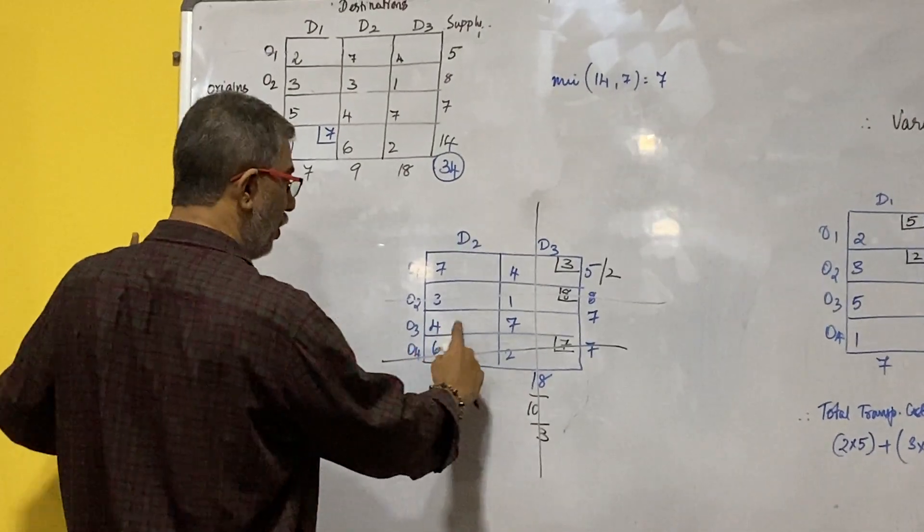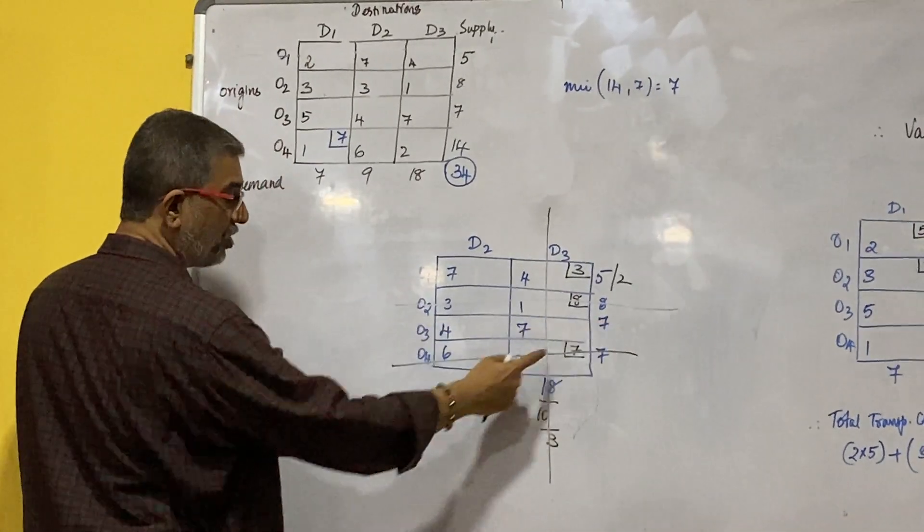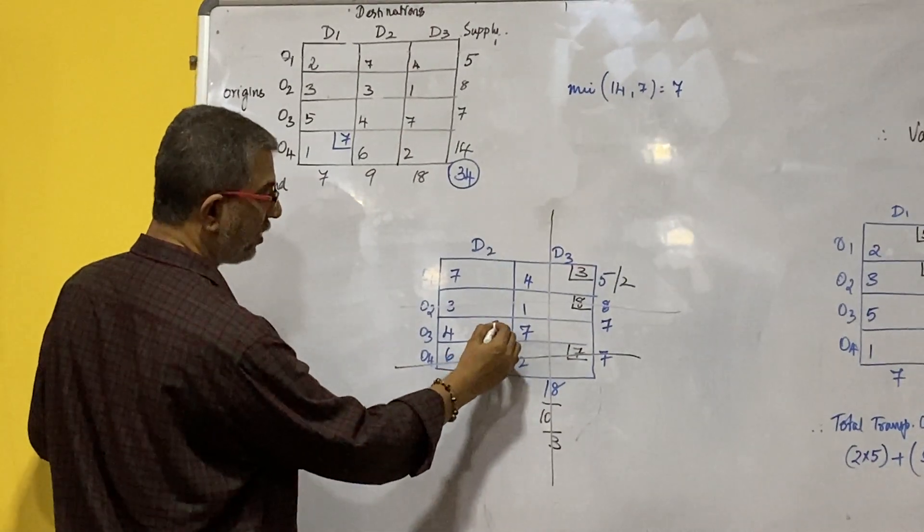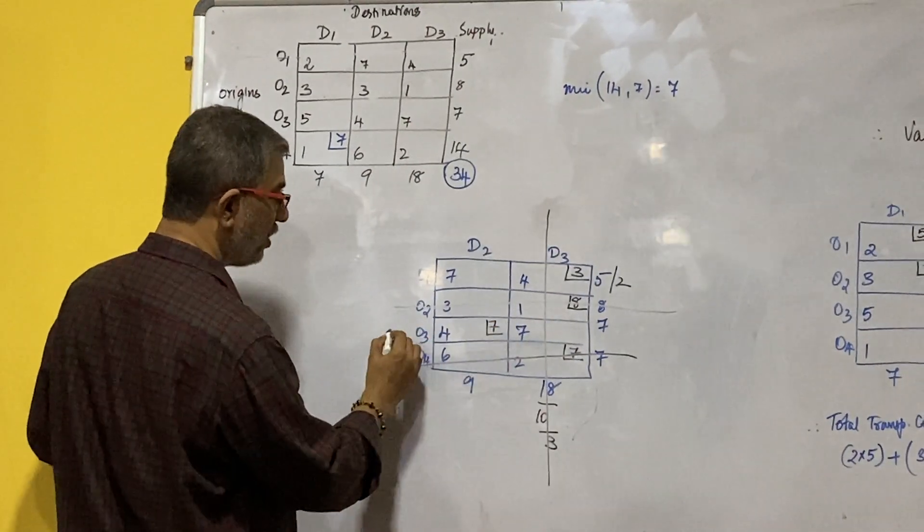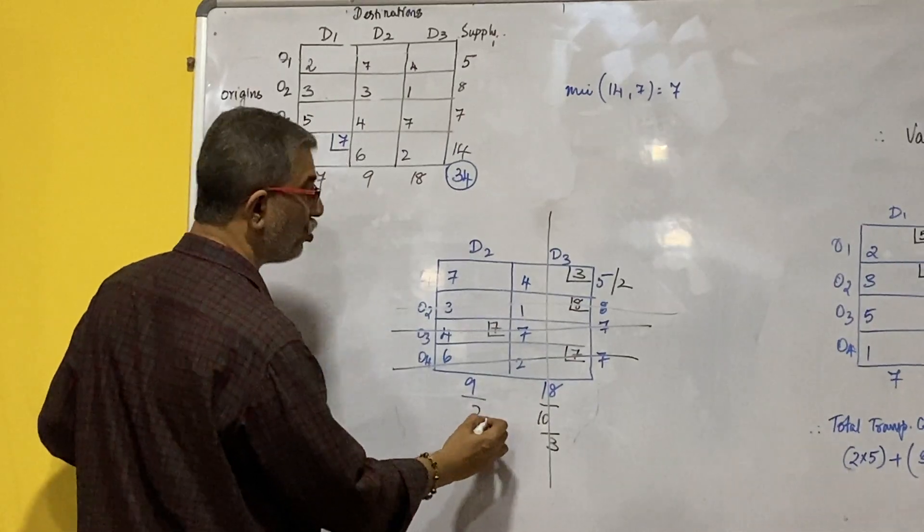This one will have 4. 7 and 9. 7 and 9. 7 will be entered over here and this row will get deleted and balance will be 2.